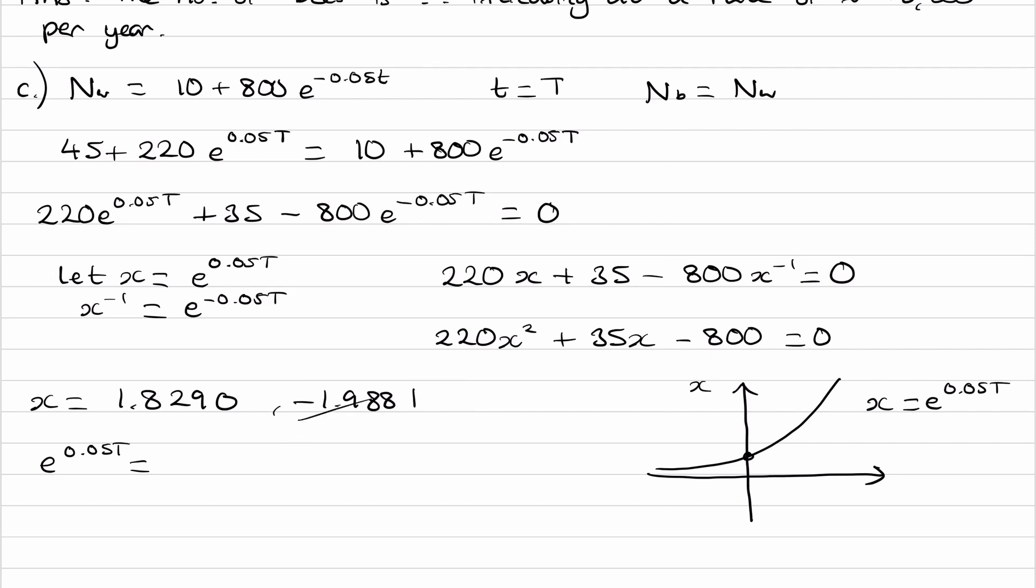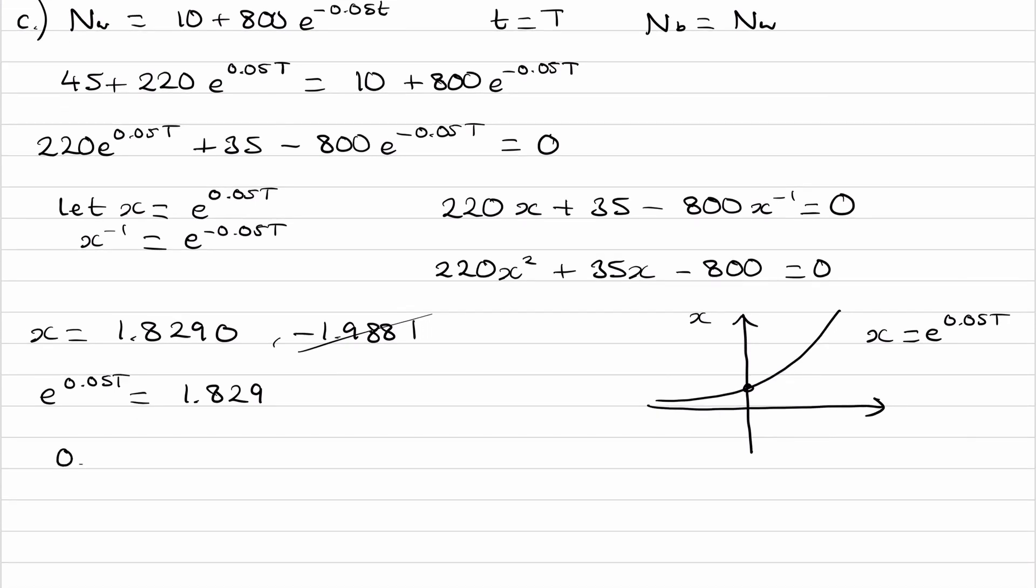So our solution will then just be e to the power of 0.05T equals 1.829. We can now do ln of both sides and then solve from there.